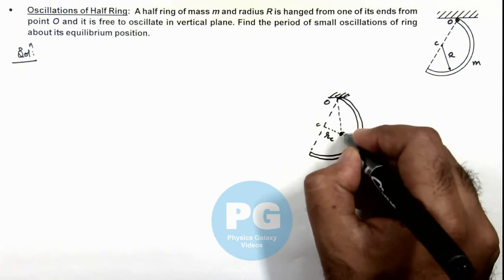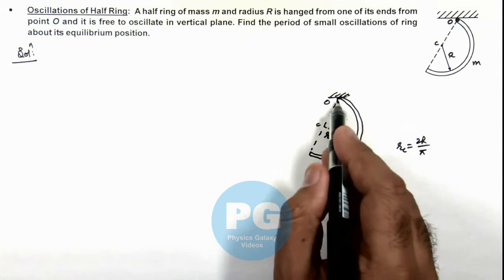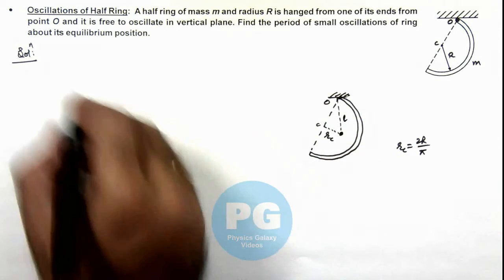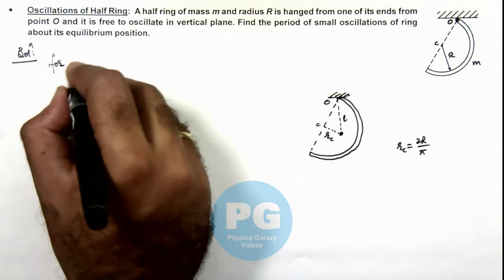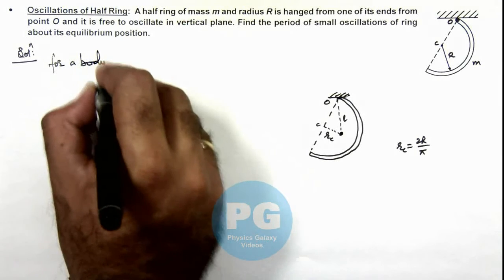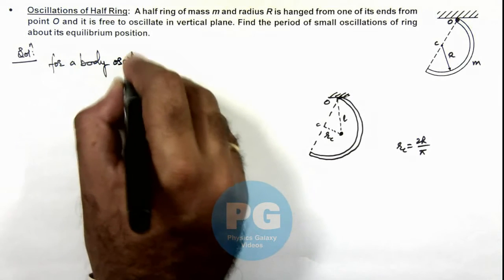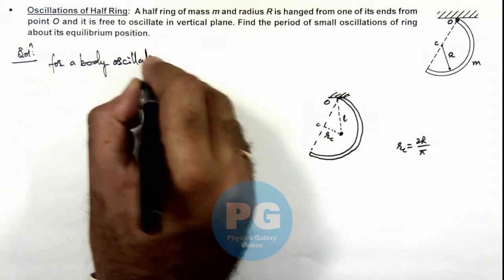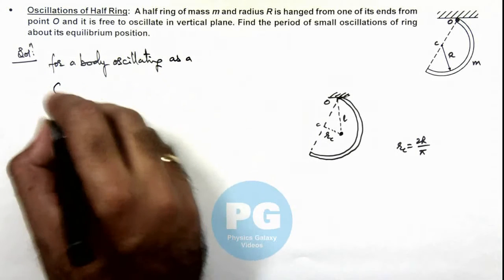And say if center of mass is at distance l from the point of suspension, then we can say for a body oscillating as a compound pendulum.